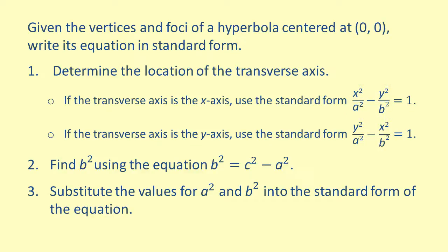On the other hand, if we have coordinates of the form 0 comma plus or minus a for the vertices and 0 comma plus or minus c for the foci — in this case y-intercepts — then the y-axis is the transverse axis. If this is the case, we would use the equation y squared over a squared minus x squared over b squared equals 1.